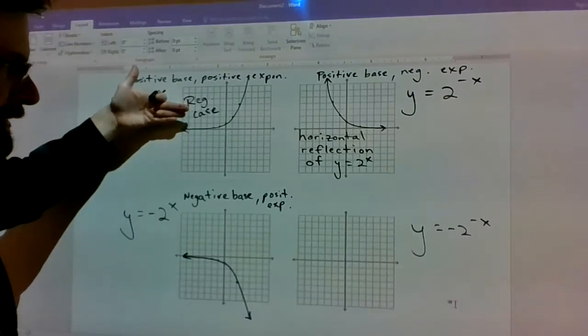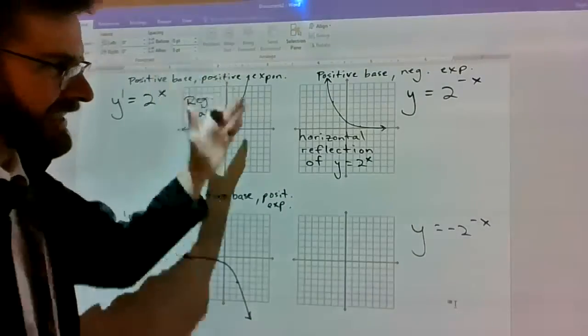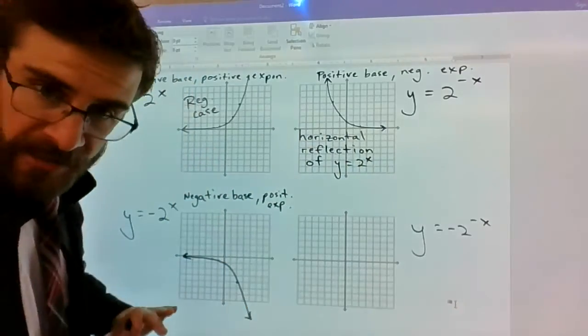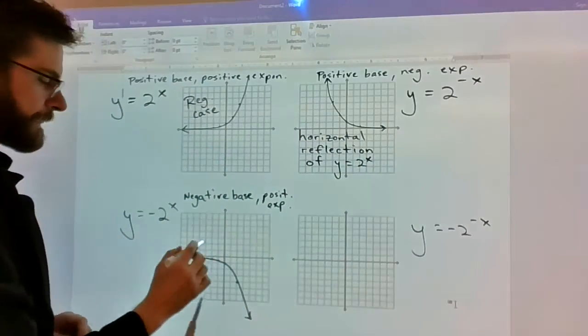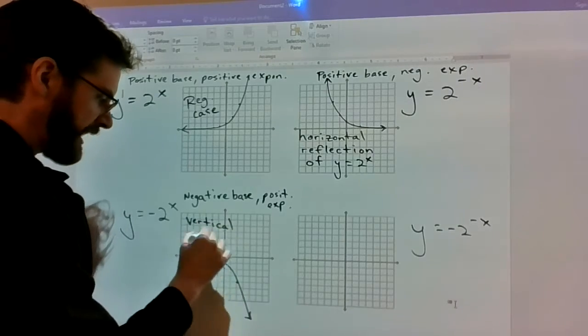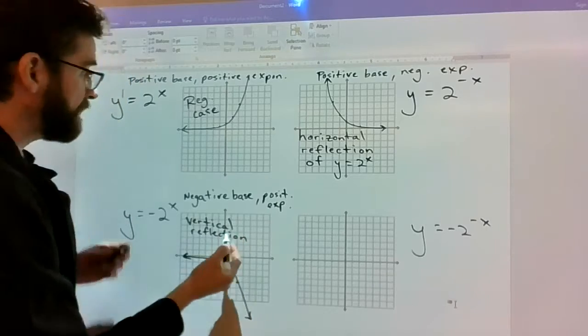And since we are flipping from top to bottom, it's sort of like instead of horizontally reflecting, we're going to be vertically reflecting. So this is a vertical reflection of our regular case.